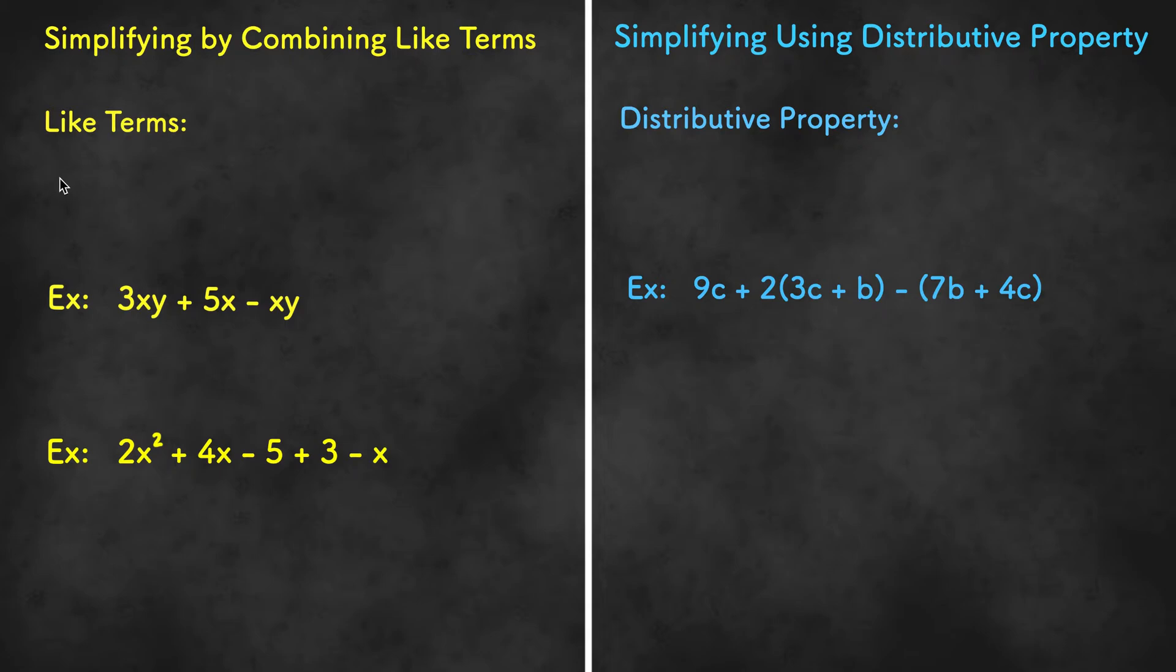Like terms are terms that have the same power and variable. An example would be 3c, c, and negative 2c. These are all like terms because they have the same variable even though they have different coefficients. The first term has a coefficient of 3, the second term has a coefficient of an invisible 1, and the last term has a coefficient of negative 2.